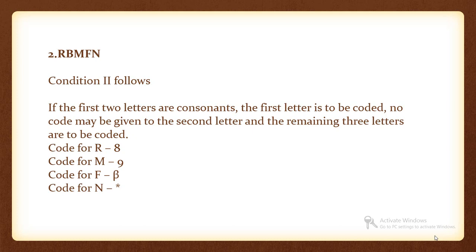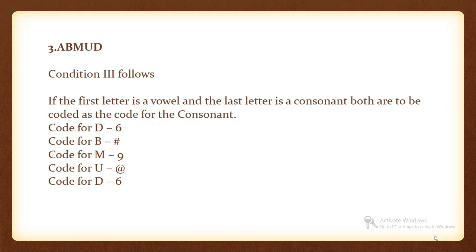Now condition 3 follows. If the first letter is a vowel and the last letter is a consonant, both are to be coded as the code for the consonant. Code for D is 6, code for B is hash, code for M is 9, code for U is at, and code for D is 6.